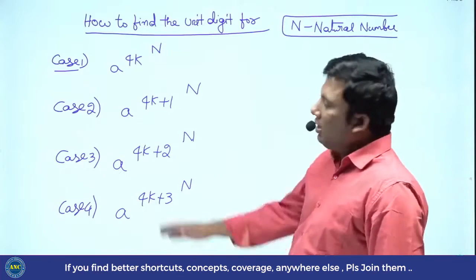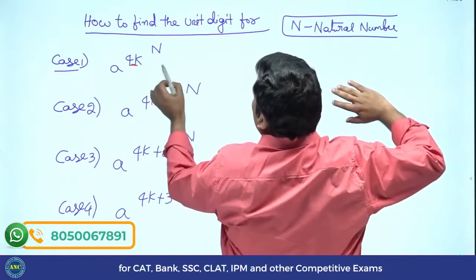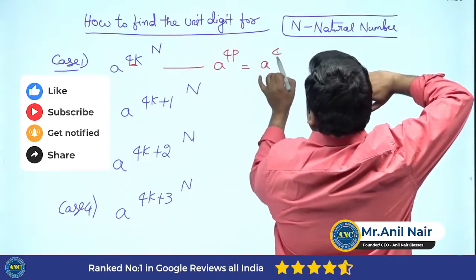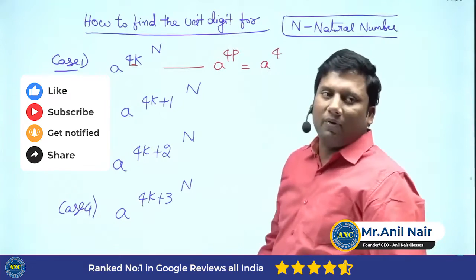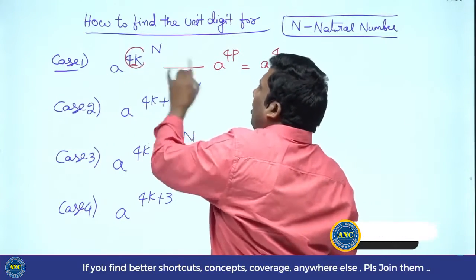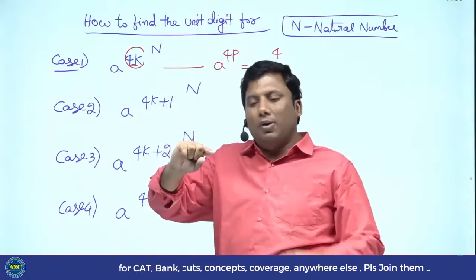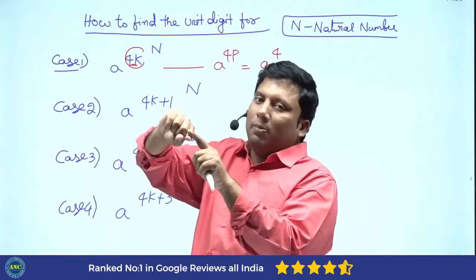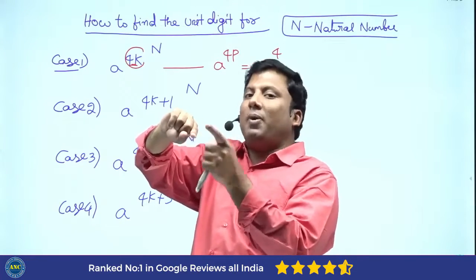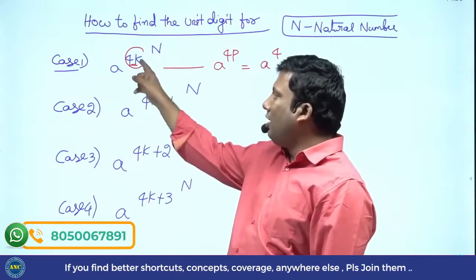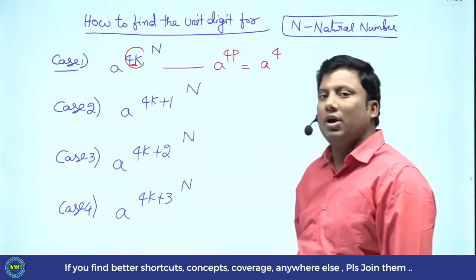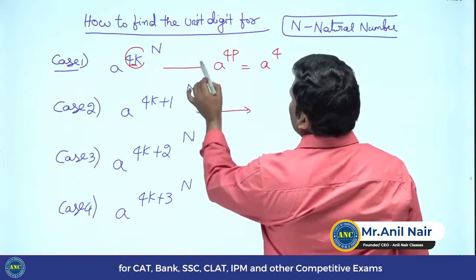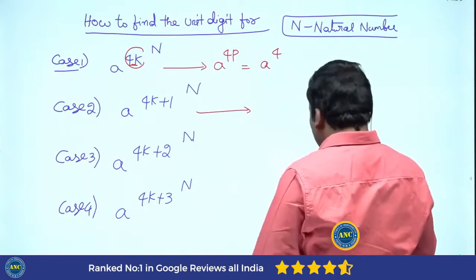If the question is power to the power and the first power is divisible by 4, the entire number is divisible by 4. A power 4p — the answer is A power 4. Because 4, 4 squared, 4 cubed, 4 to any natural number — all are divisible by 4. So A power 4p gives A power 4.